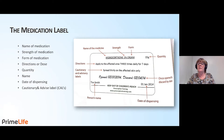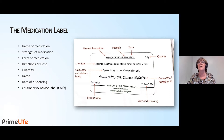The name of the resident. The date of dispensing, which is on here — this is not the expiry date, which we'll look at later. And any cautionary and advisory labels, which are also called CALs. The cautionary advisory label on this example is 'spread thinly onto the affected skin only'.